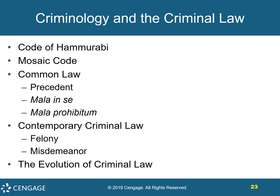Now let's look at criminology and the criminal law. The Code of Hammurabi was the first written criminal code. There is also the Mosaic Code, the law of the ancient Israelites, and common law, which is set by precedent — including mala in se and mala prohibitam, which are statutory crimes. Contemporary criminal law includes felony versus misdemeanor, enforces social control, discourages revenge, expresses public opinion, teaches moral values, deters criminal behavior, and helps maintain the social order.